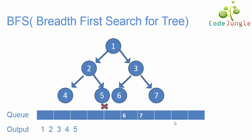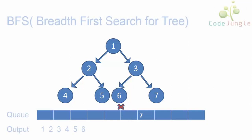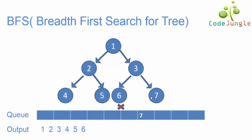The next element in the queue is six. We check if there are any child nodes for six — there are none, so six is included in the output with no elements added to the queue. The next element is seven. Seven is included in the output, and as there are no child nodes for seven, nothing is added to the queue.